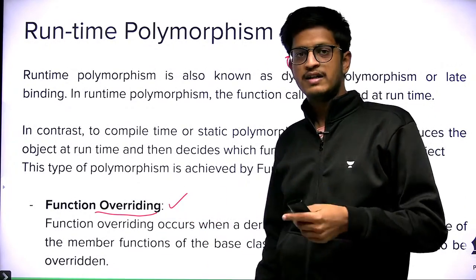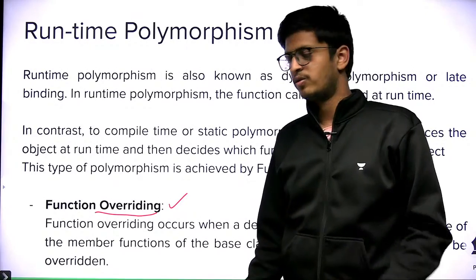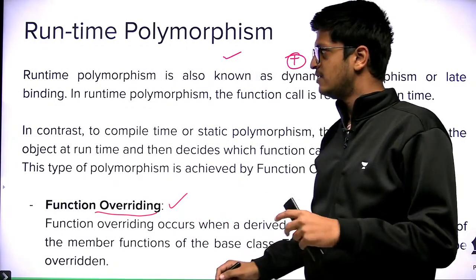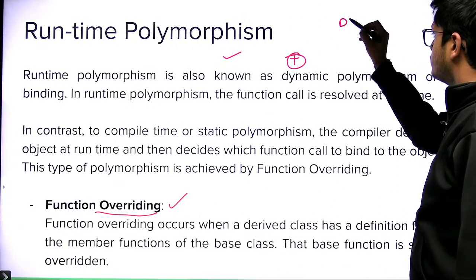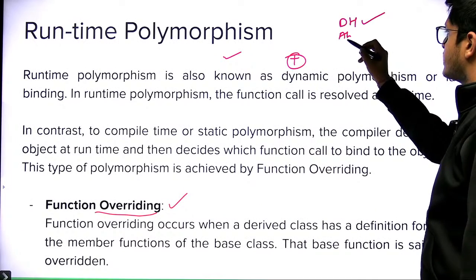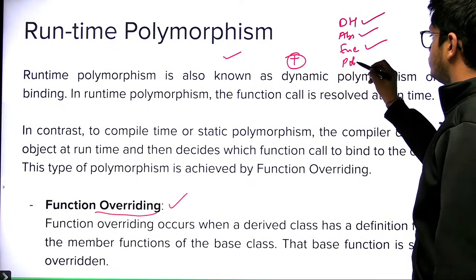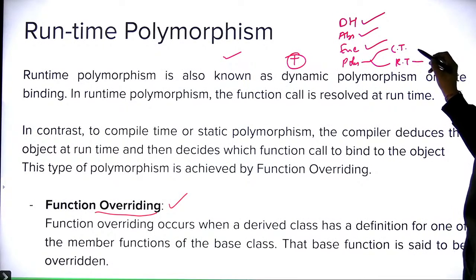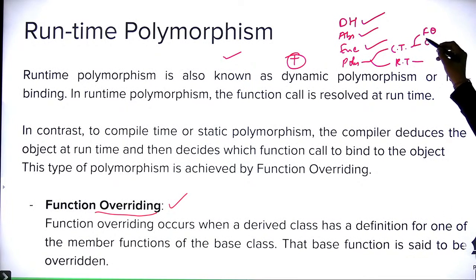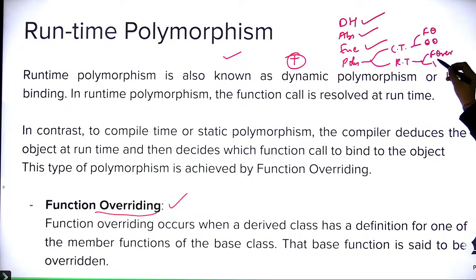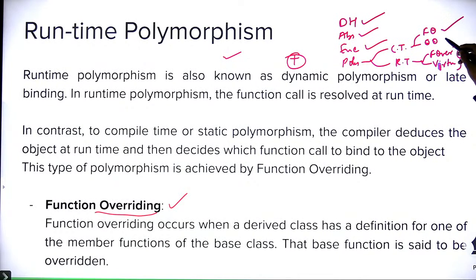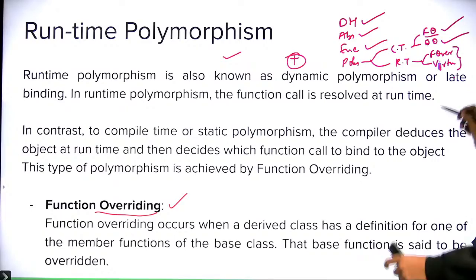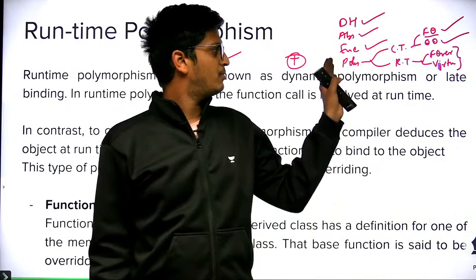Runtime polymorphism can be achieved using function overriding, which will be covered later in the course. So to summarize: data hiding, abstraction, encapsulation you now know. In polymorphism there are two types — compile time, achieved using function overloading or operator overloading, and runtime, achieved using function overriding or virtual functions in classes.